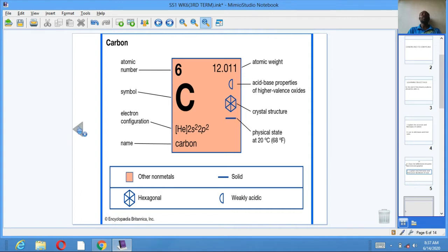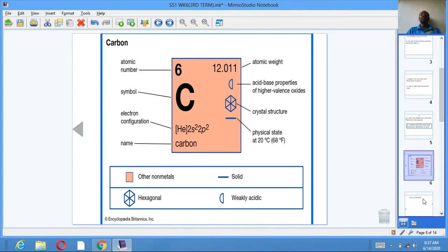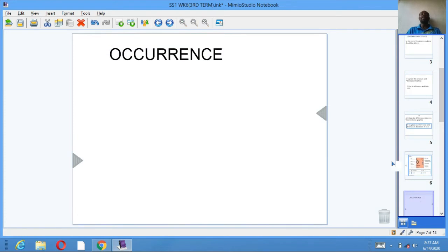It is a non-metal. It is solid at 20 degrees C. Its shape is hexagonal, weakly acidic. It has acid-base properties of higher valence oxide. It is found in group 4, period 2. Its valency is 4.